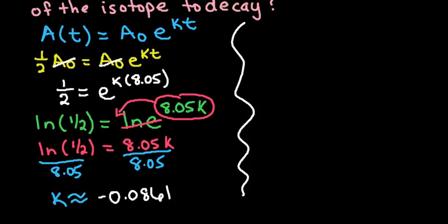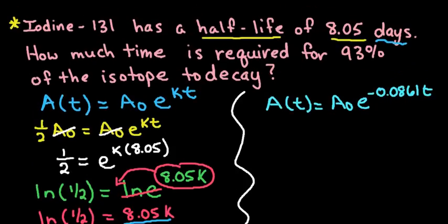If you're solving further in the problem, it is very important that you don't round. Now we're going to use the equation A(t) = A₀e^(-0.0861t). We're going to go back to the second part of the problem that we didn't address yet. It's asking for how much time, so this time we're going to solve for t, is required for 93% to decay. If you think about it, 93% is going to be gone, which means that we only have 7% left.